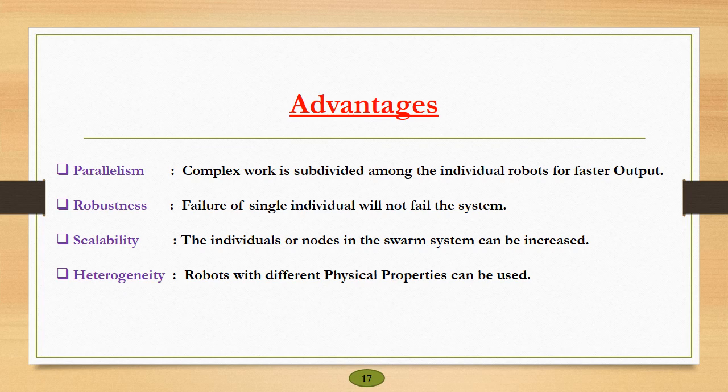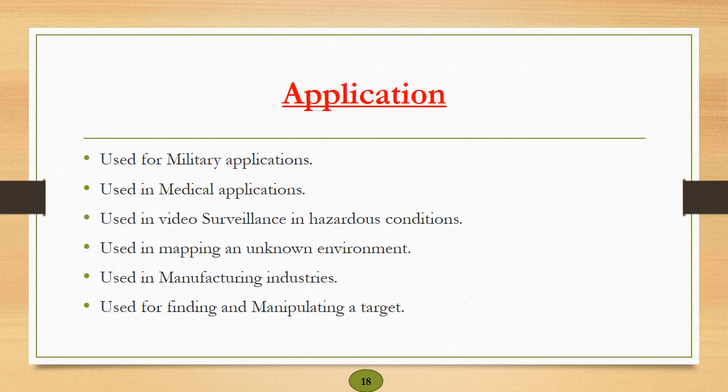These are the advantages of a swarm robotic system. First is parallelism: a complex task can be subdivided into subtasks and these tasks can be given to individual robots for a faster output. The second one is robustness: the failure of a single individual will not fail the whole system. Scalability: the number of robots in this robotic swarm can be increased or decreased according to the complexity of the task. Another one is heterogeneity: robots with different physical properties can be used.